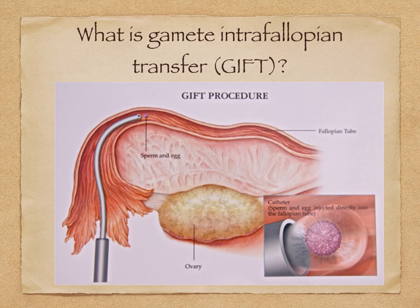There is another technique called gamete intra-fallopian transfer, or GIFT. This is when the eggs are removed from the ovary and placed with the sperm in the oviduct. As shown in this diagram, the egg and sperm are injected back into the fallopian tube, which increases the chances of fertilization. However, the process occurs in vivo, not in vitro.